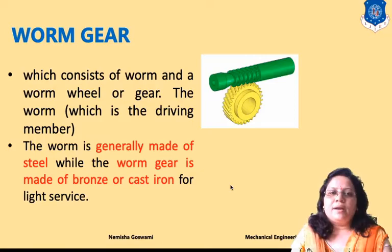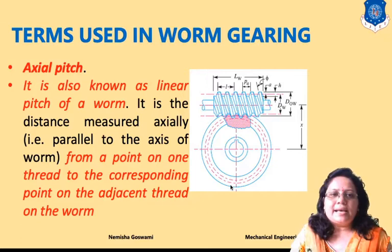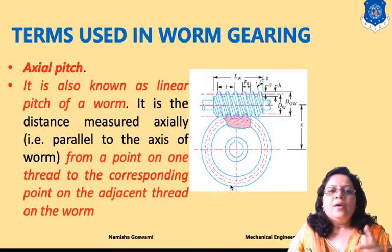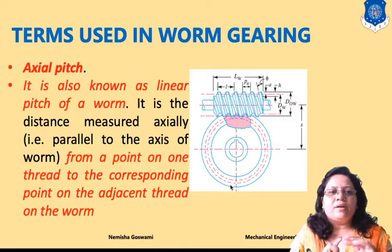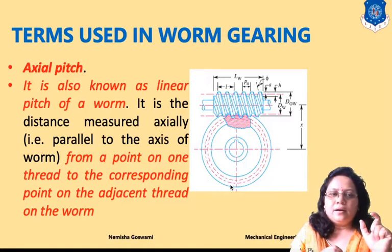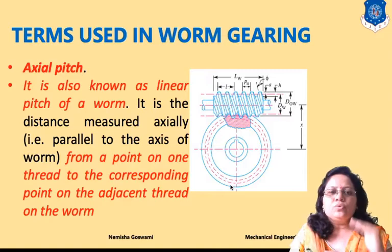Now, the first basic terminology is axial pitch. As you can see in the figure, it is indicated by PA and is also known as the linear pitch of the worm. It is defined as the distance measured axially — parallel to the worm axis — from a point on one thread to the corresponding point on an adjacent thread.